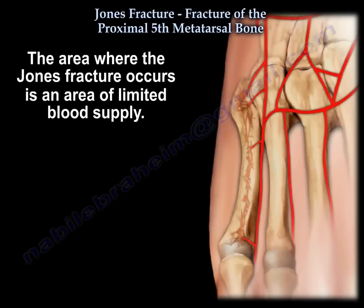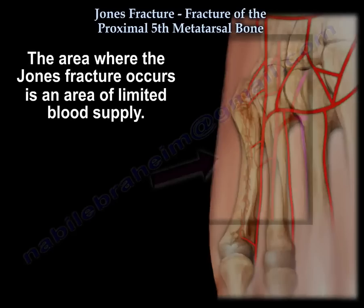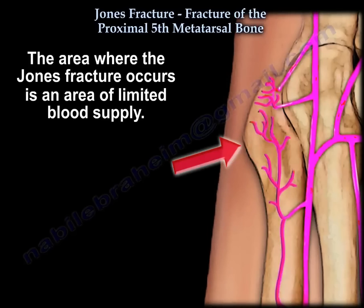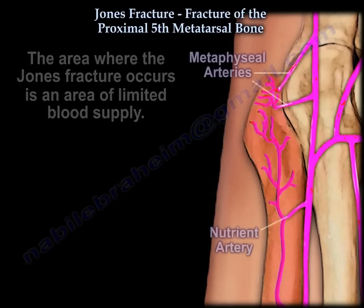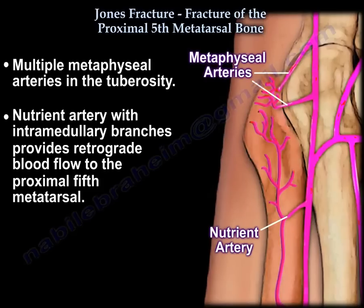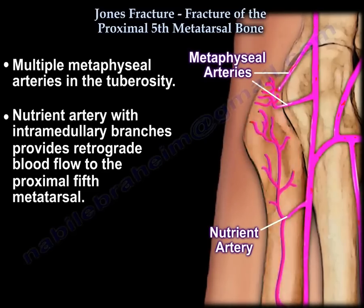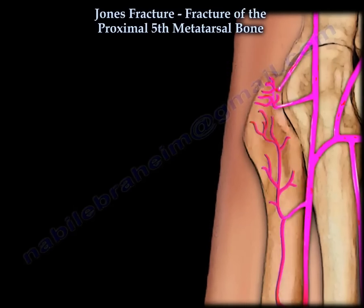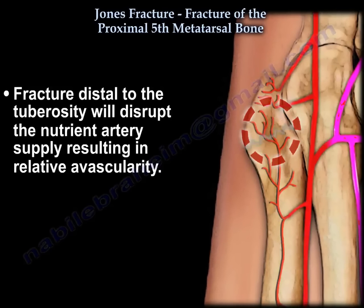The area where Jones Fracture occurs is an area of limited blood supply. There are multiple metatarsal arteries at the tuberosity, and there is a nutrient artery with intramedullary branches that provides retrograde blood flow to the proximal 5th metatarsal bone. A fracture distal to the tuberosity will disrupt the nutrient artery blood supply, resulting in relative avascularity of the bone.